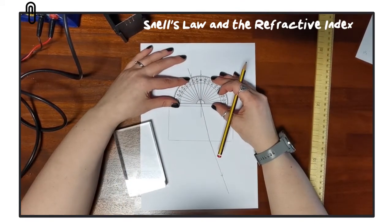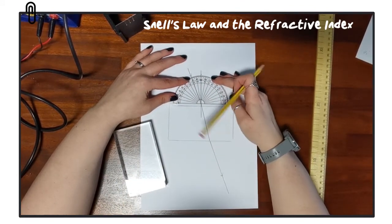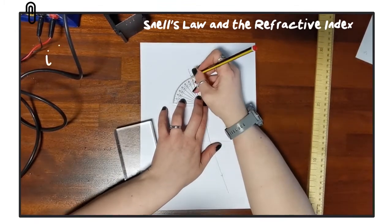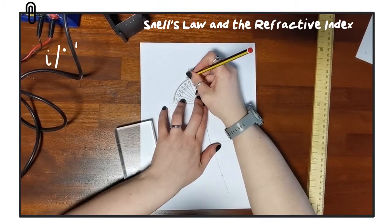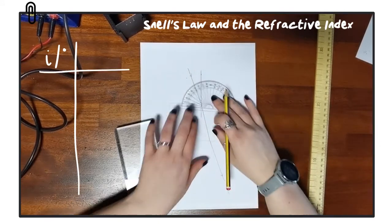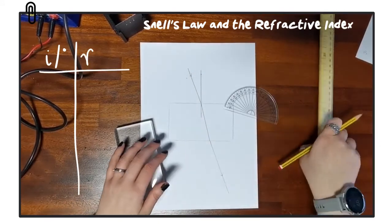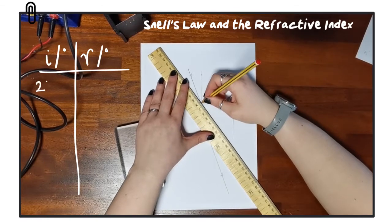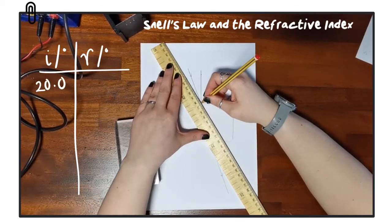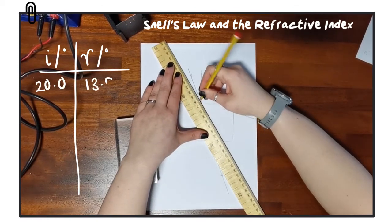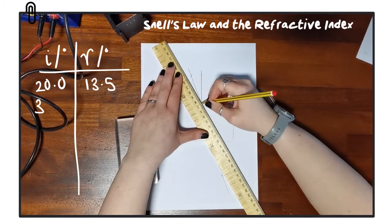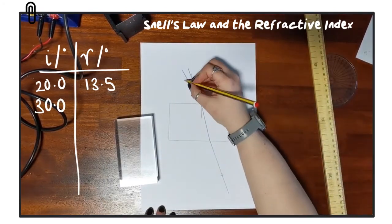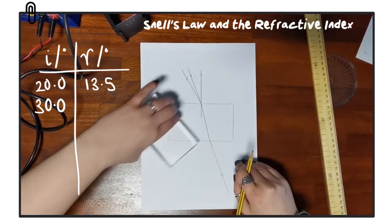We continue this process for a range of angles of incidence. Having already done 20 degrees, we now do 30, 40, 50, and 60 degrees. For each one we repeat the process: mark where the emergent ray is, join the line inside the block, and measure the corresponding angle of refraction.